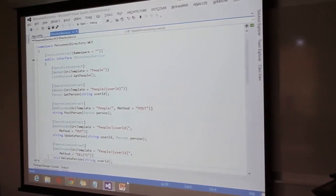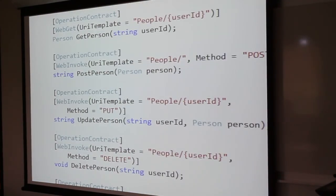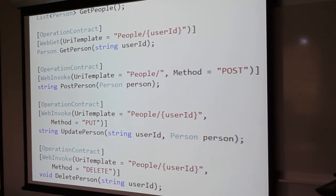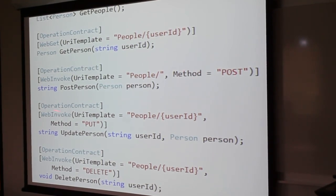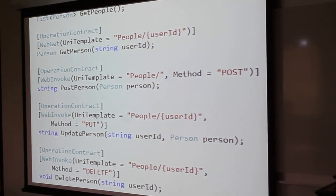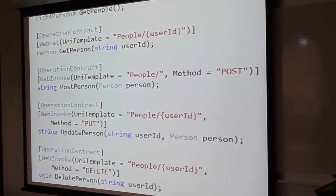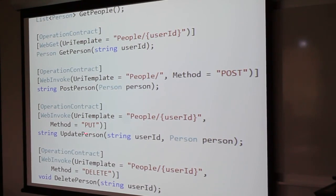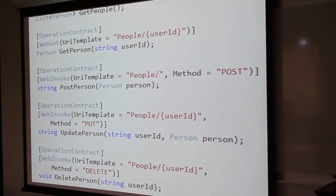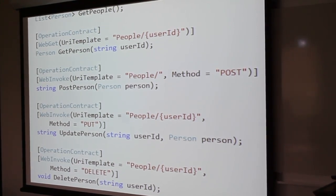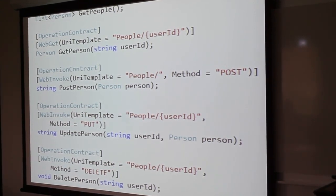GET gets its own WebGet attribute because it's used a lot more than the other REST verbs. The rest use WebInvoke, as you can see here. In the WebInvoke notes, we have a UriTemplate like we have for GET, but we also have to define a Method. In this case we have a method called POST, a method called PUT, and a method called DELETE. These are saying: match this to whatever verb is coming in. If I use this URI with a POST verb it maps to this method; PUT gets mapped here; DELETE gets mapped here. You can use any verb in the standard. The problem is this is a magic string and it's prone to misspelling because human beings type these.